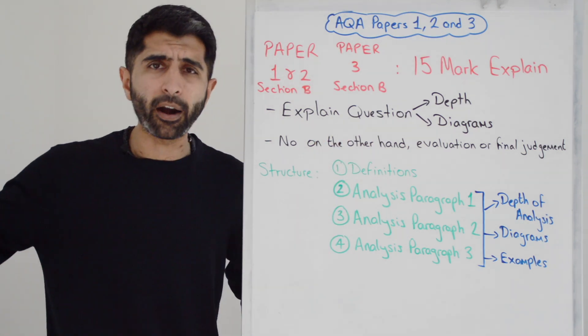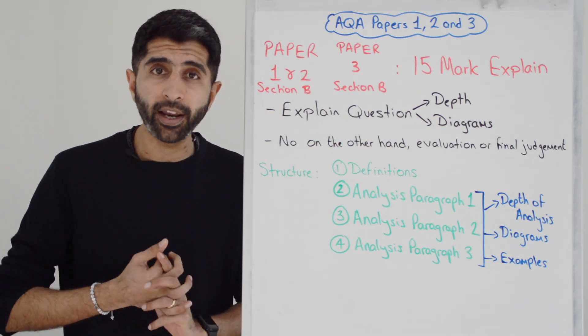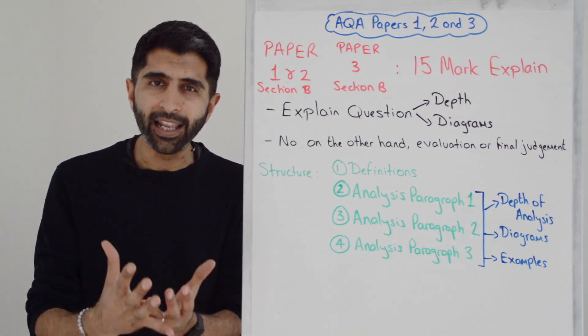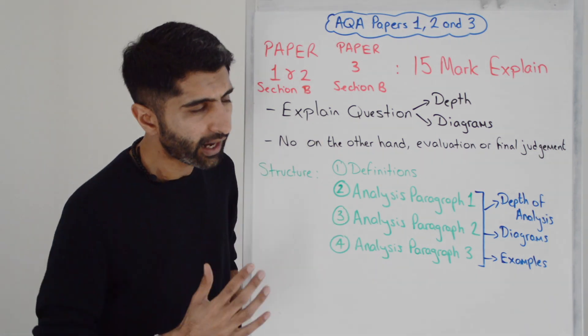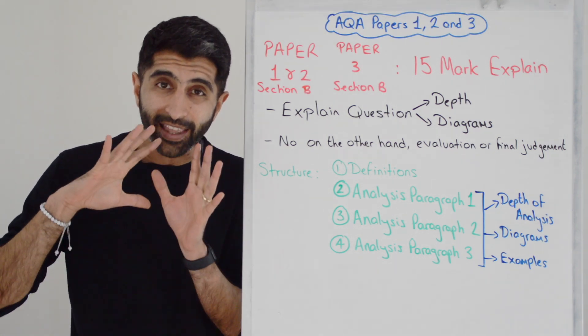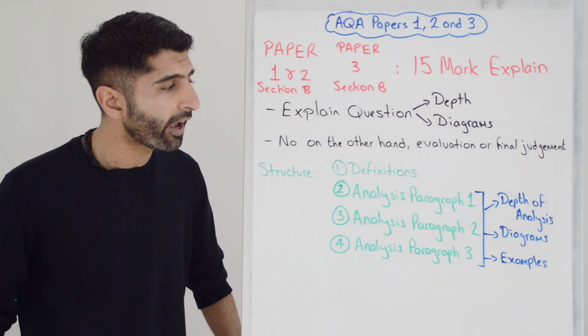So, in analysis paragraph one, you've maybe drawn a diagram to illustrate what you're writing. Then in analysis two, is there another diagram that's useful here to illustrate what I'm writing? If you're doing a third analysis paragraph, is there another diagram that can be useful to illustrate what I'm writing? If the answer is yes, always look to draw diagrams.